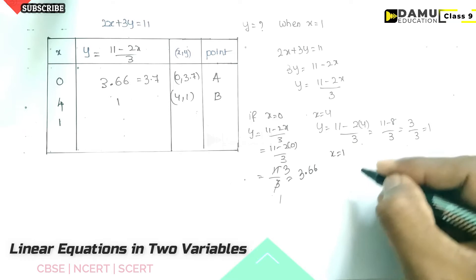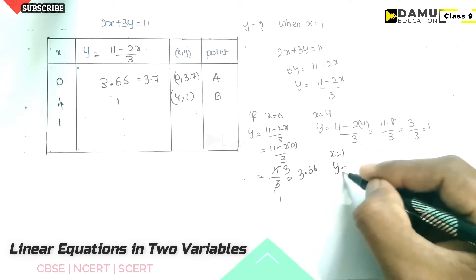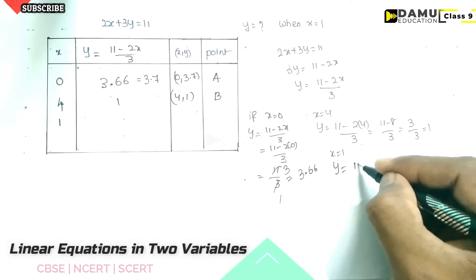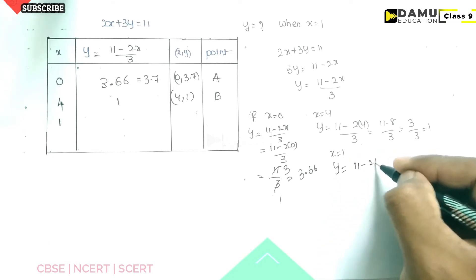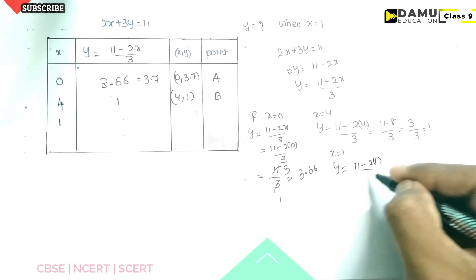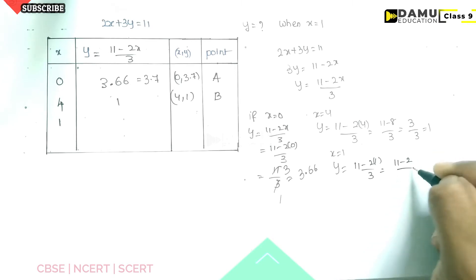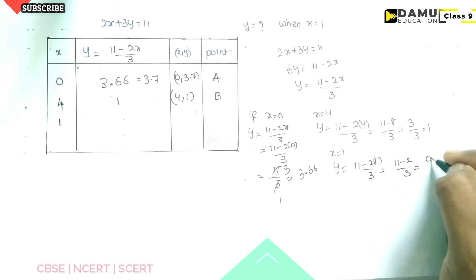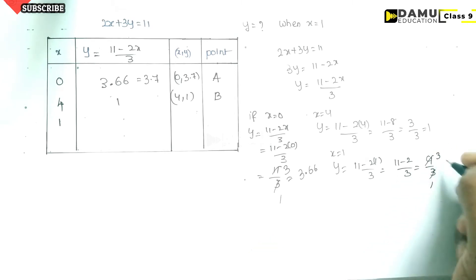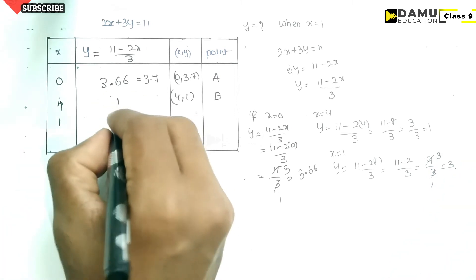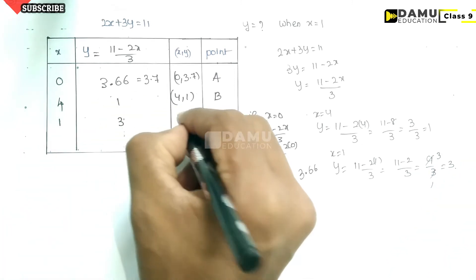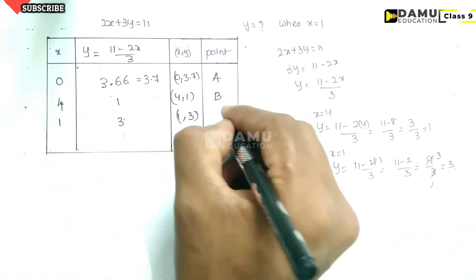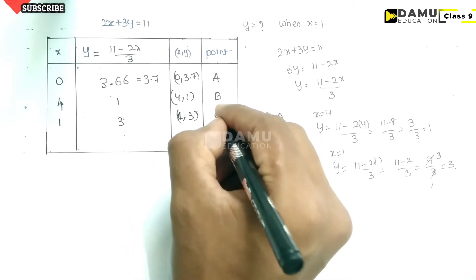When x equals 1, y equals (11 minus 2 times 1) divided by 3, so 11 minus 2 divided by 3, which gives 9 divided by 3, and we get 3. So the point is (1, 3). Let us call this point C.